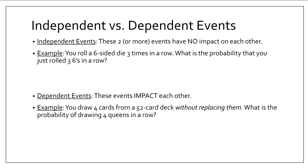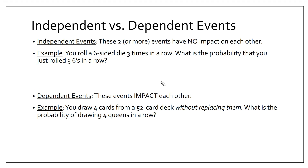Let's look at what I mean by independent and dependent events. Independent events have no impact on each other — they don't impact each other. One happens, and then the other happens, and they have no impact.